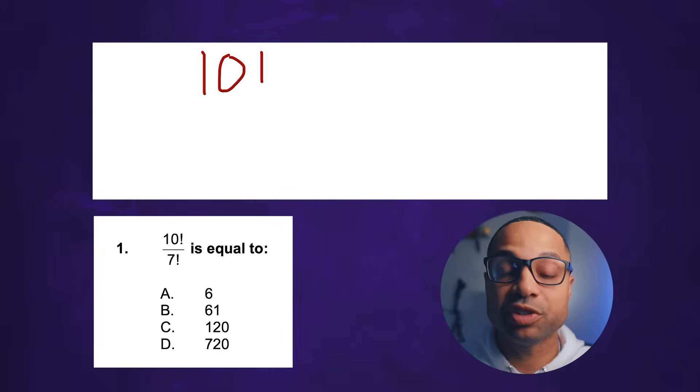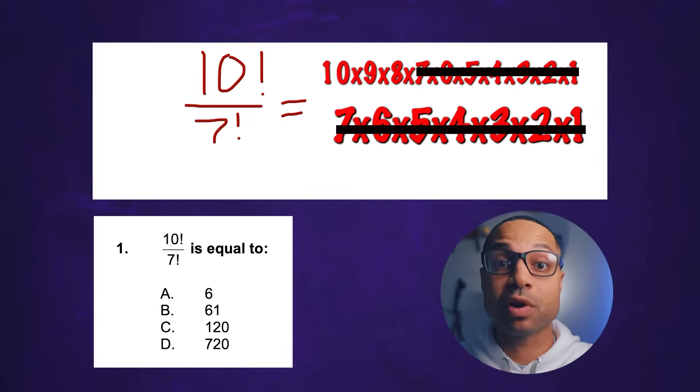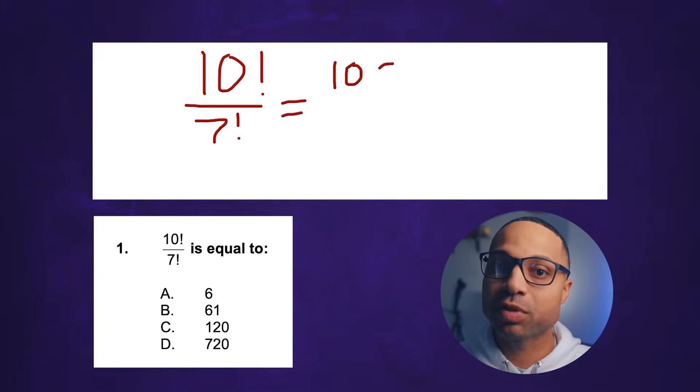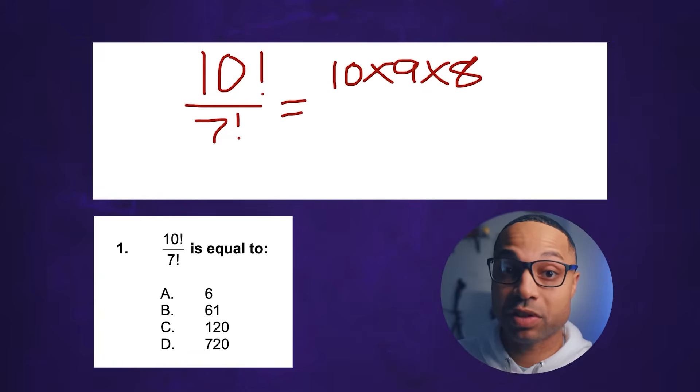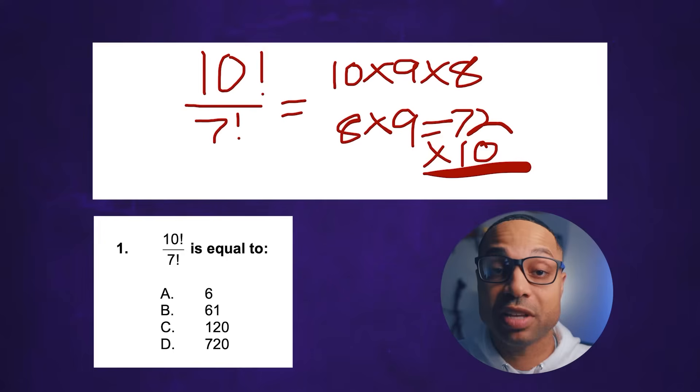So we're going to look at a problem. The problem is you have 10 factorial divided by 7 factorial. Now because you're dividing 10 factorial by 7 factorial, all this means is the 7 factorial cancels the 7 factorial above it. So you only have to multiply 10 times 9 times 8 because you've canceled out the 7 and everything below it. So now all you have to do is some easy multiplication. The best way to do this is to multiply 8 times 9 which is 72 and then multiply 72 times 10 which is 720.